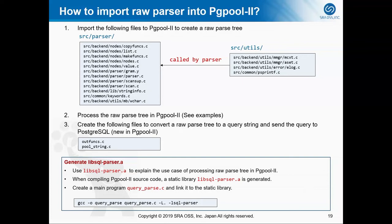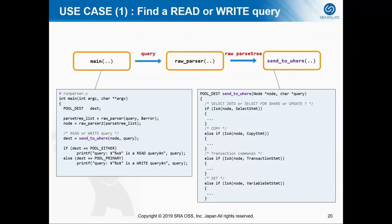I will use lib-sql-parse, a static library, to show you how to process a raw parse tree in PGPool. When you compile PGPool source code, you can get this static library in the parser directory. For my examples, I will use a test program and link it to this static library. Here I will show you three use cases.